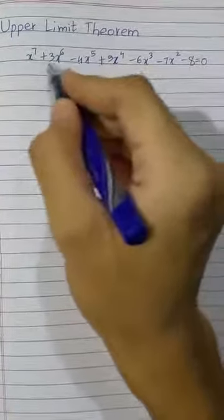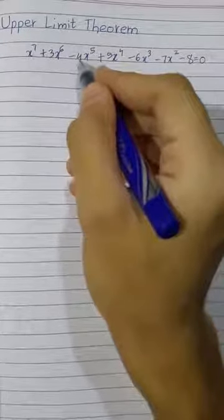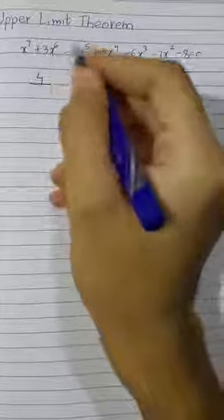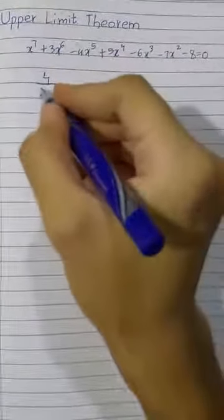Now to find the upper limit of this equation, point out the negative coefficients. So positive coefficient, positive coefficient, and negative coefficient. So divide the negative coefficient by preceding positive coefficient. It is 1 plus 3.